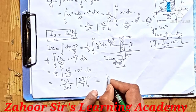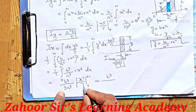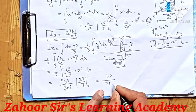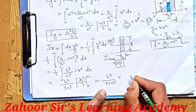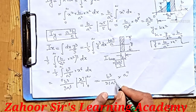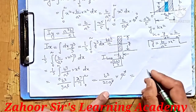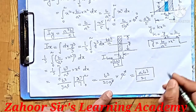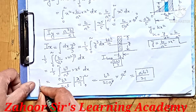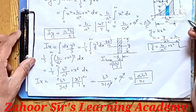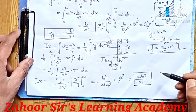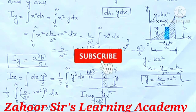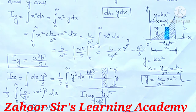Substituting the limits, we get b³/(3a⁶) · a⁷/7 = b³ · a/(21), since a⁷/a⁶ = a. So the moment of inertia of this shaded region about the x-axis is Ix = ab³/21. I hope you enjoyed this question — please subscribe to my channel and press the bell icon. Thank you very much for watching.